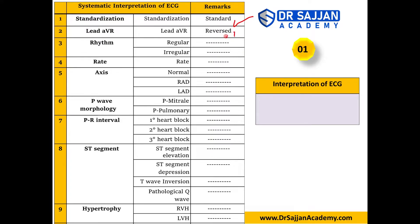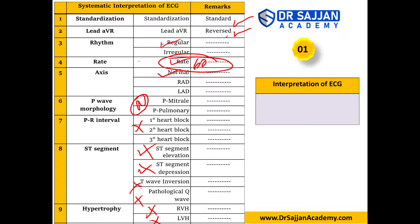Summary of the first ECG: standardization — not standard; lead reversed — reversed correctly; rhythm — regular; rate — 60 beats per minute; axis — normal; P wave — normal; ST segment — normal; hypertrophy — not present; bundle branch block — not present. The diagnosis of this ECG is a rate less than or equal to 60 beats per minute — borderline bradycardia with otherwise normal findings.